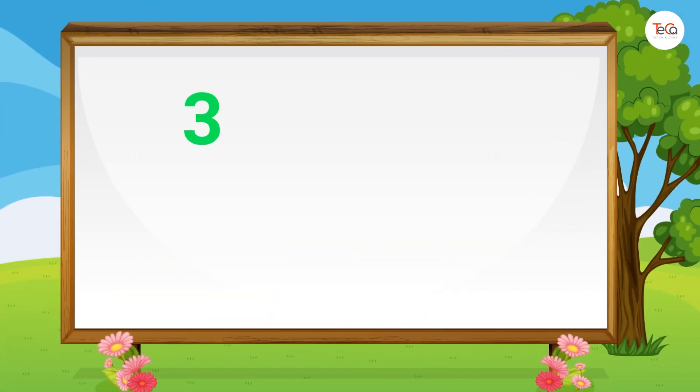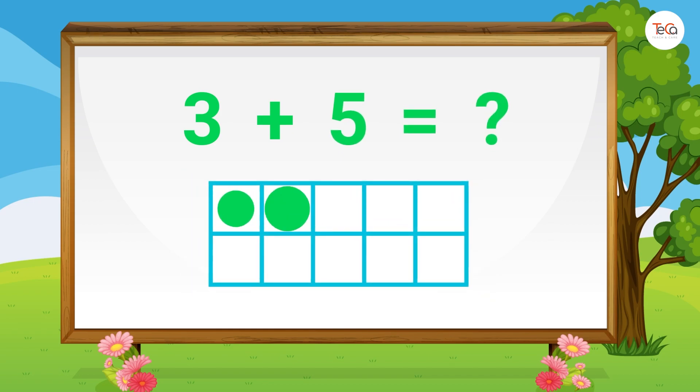Next, 3 plus 5 equals... We draw 3 dots then 5 dots. Here we have 1, 2, 3, 4, 5, 6, 7, 8. So 3 plus 5 equals 8.